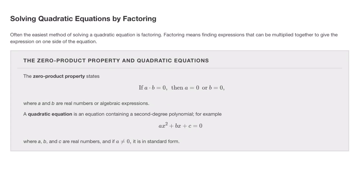Let's look at solving quadratic equations by factoring. Often the easiest method of solving a quadratic equation is factoring. Factoring means finding expressions that can be multiplied together to give the expressions on the side of the equation. The zero product property states that if you have two or more things that multiply to give zero, then either the first thing is zero or the second thing is zero, where a and b are real numbers or algebraic expressions.